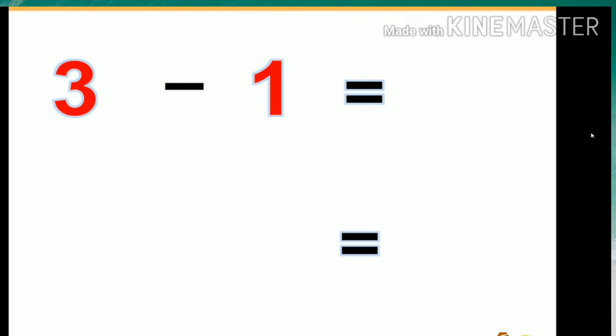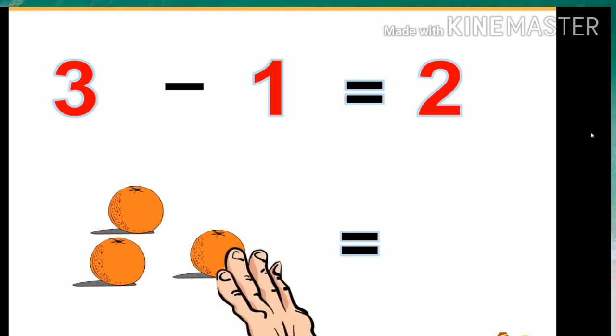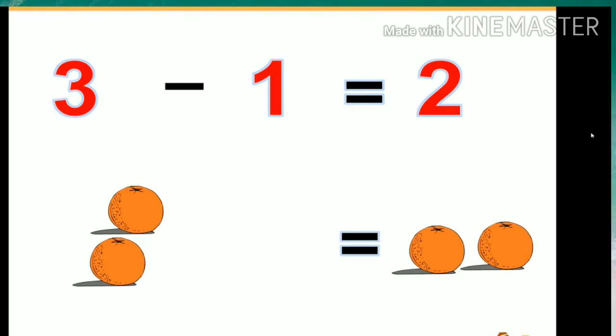3 minus 1 equals 2. If we have three oranges and we take away one orange, we only have two oranges left.